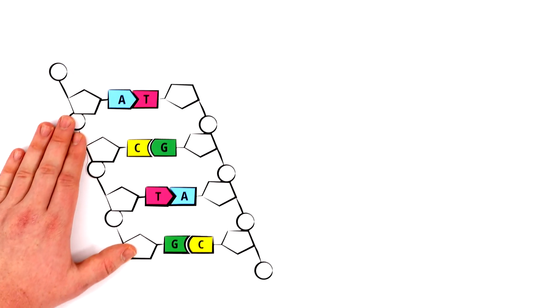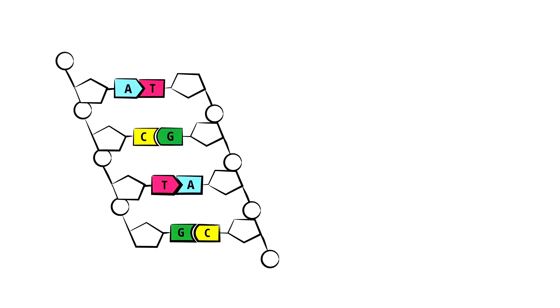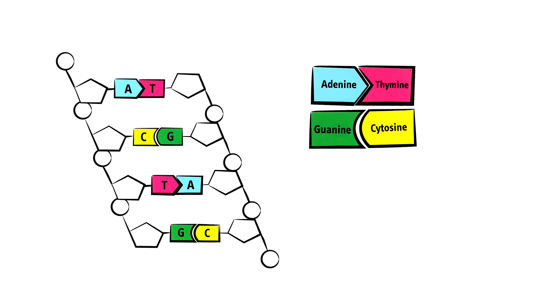Single nucleotides are connected to each other in the middle. Adenine can only connect to thymine, and guanine only to cytosine.